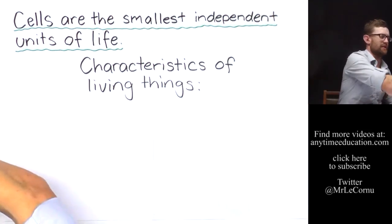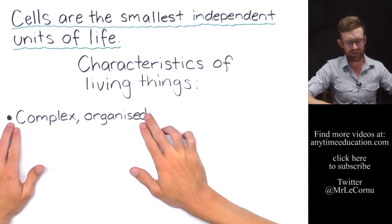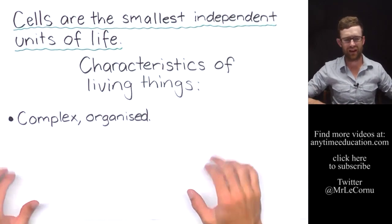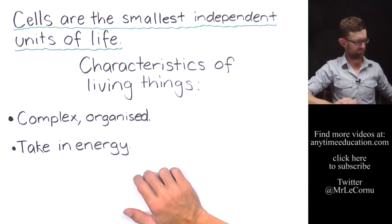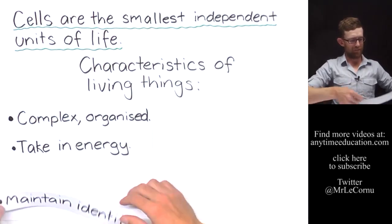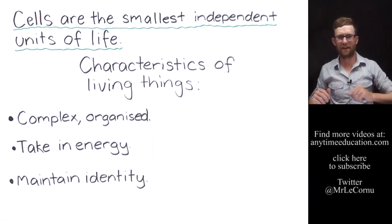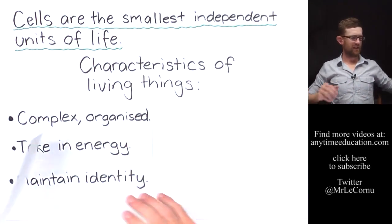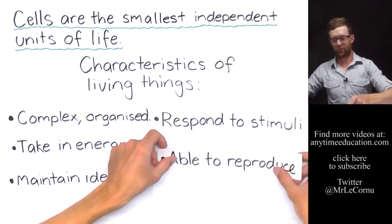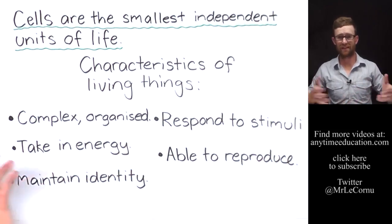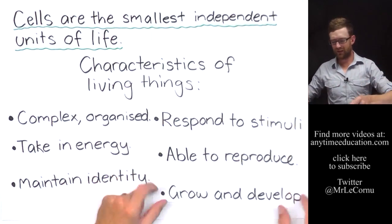The characteristics of living things are that they are, firstly, complex and organized. They take in energy. They can maintain their own identity, so you can distinguish where they begin and where they end. They respond to stimuli. They're able to reproduce, which we've already seen when we looked at cell division just before. And, of course, to be living they need to be able to grow and develop.